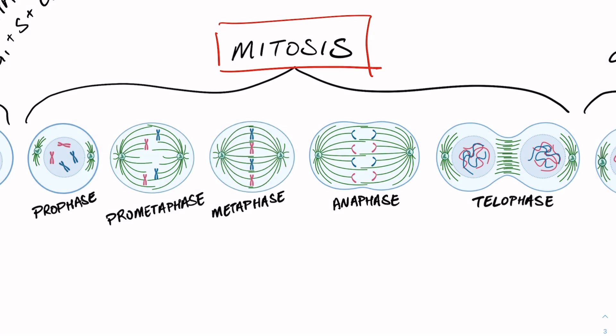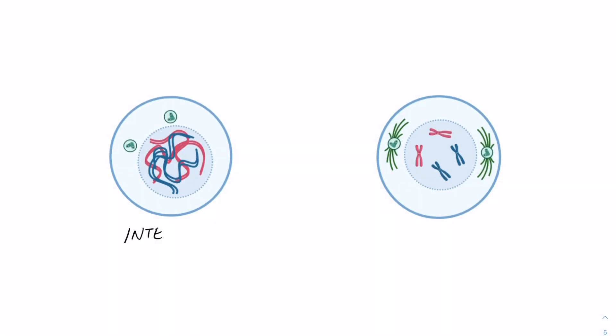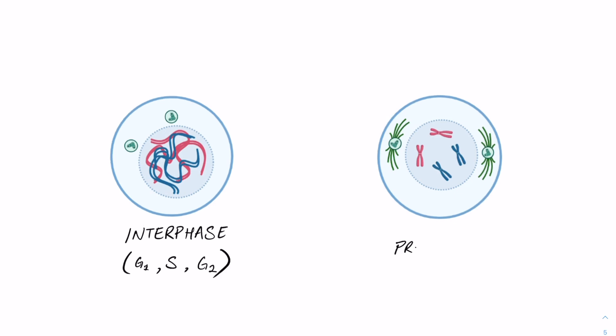Before we take a closer look at what happens within each of these phases, let's identify some cellular components that will help us understand what's actually going on. Here I've got two images of cells in different stages of the cell cycle. Firstly, on the left we have interphase, which is G1, S, and G2. And on the right is an image depicting a cell in prophase, which is the first stage of mitosis.